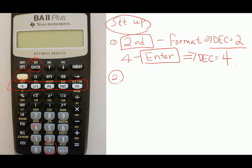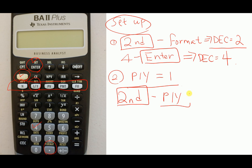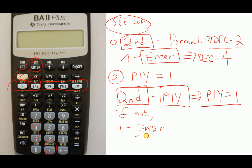The second step: we have to confirm that the number of payments per year, P/Y, equals 1. Press second, then press P/Y. You probably already have P/Y equals 1. If so, just leave it. If it is not 1, then change it: press 1 and Enter. You must have P/Y equals 1.